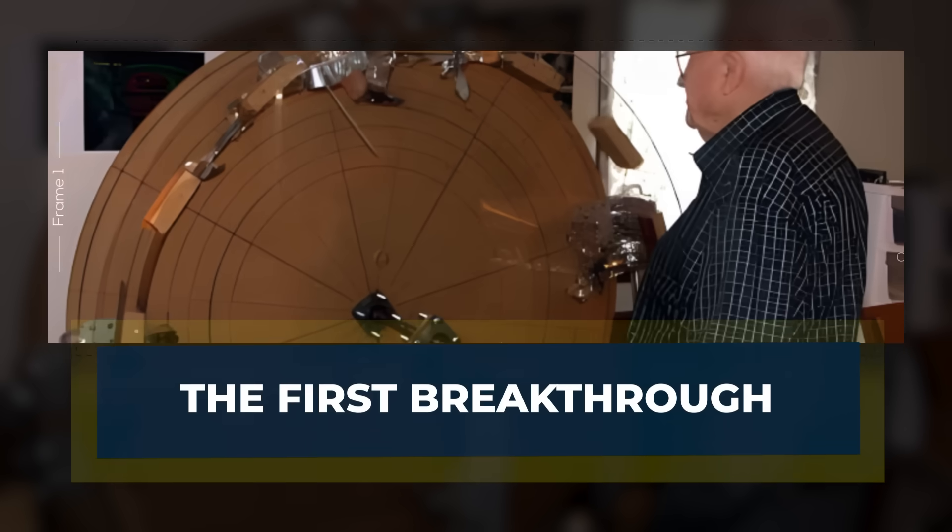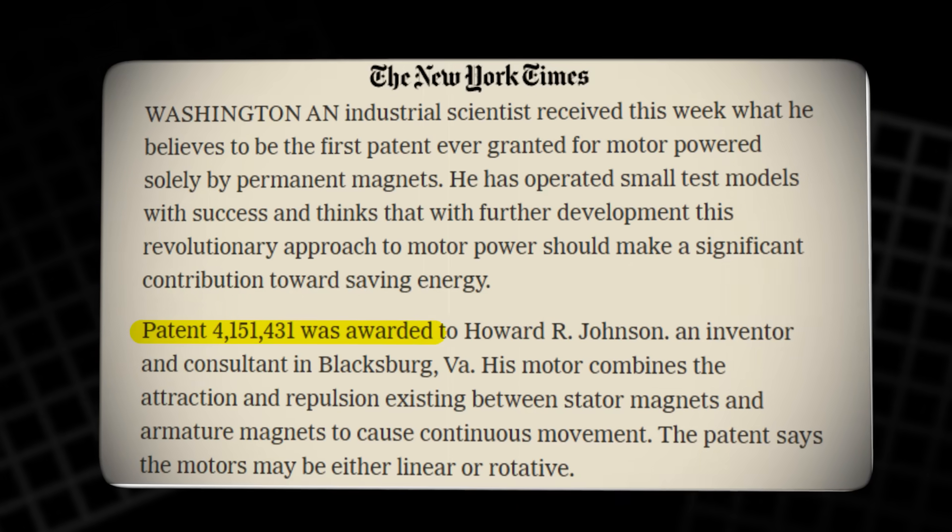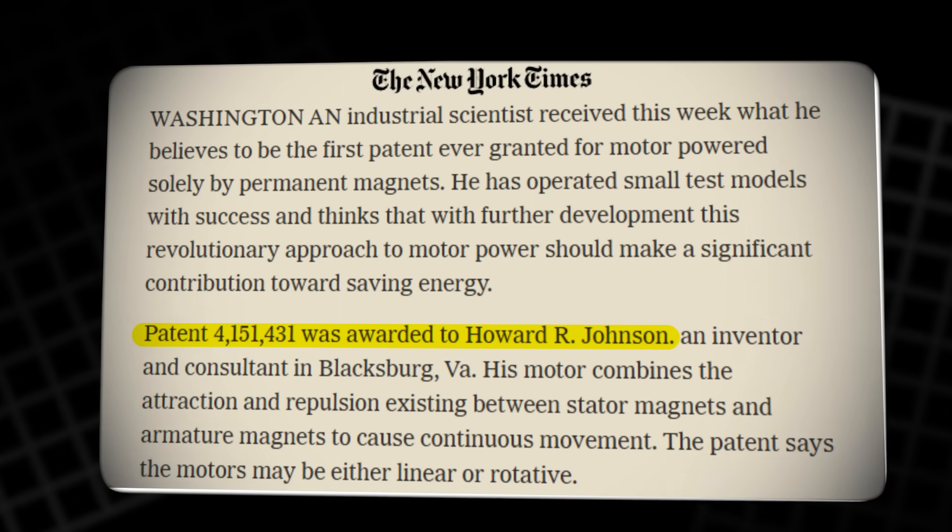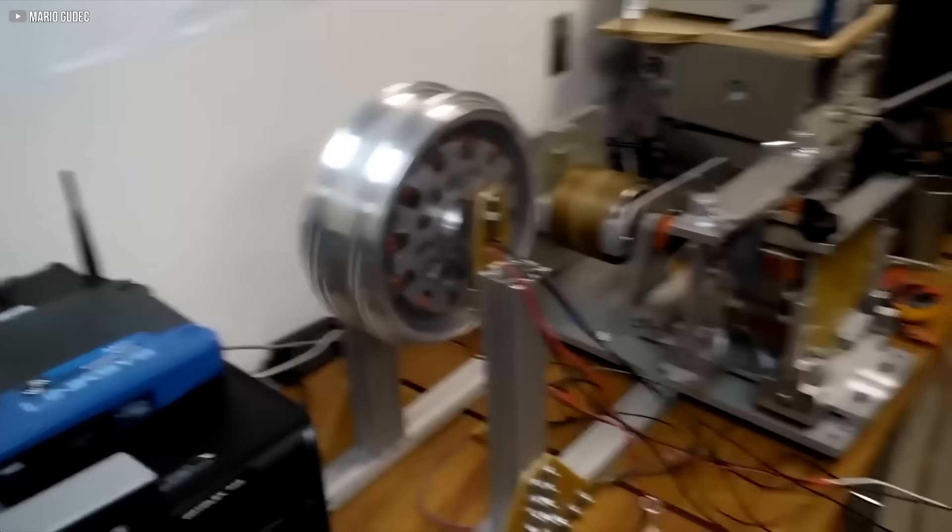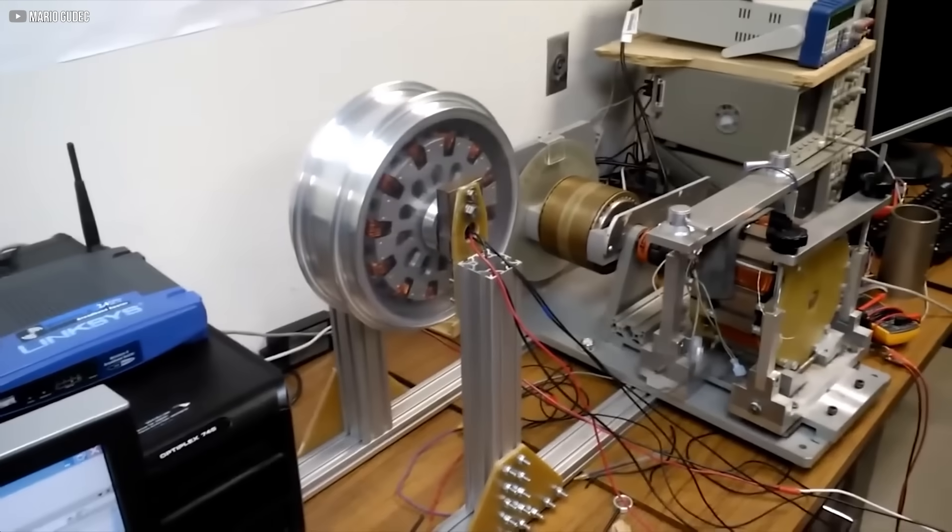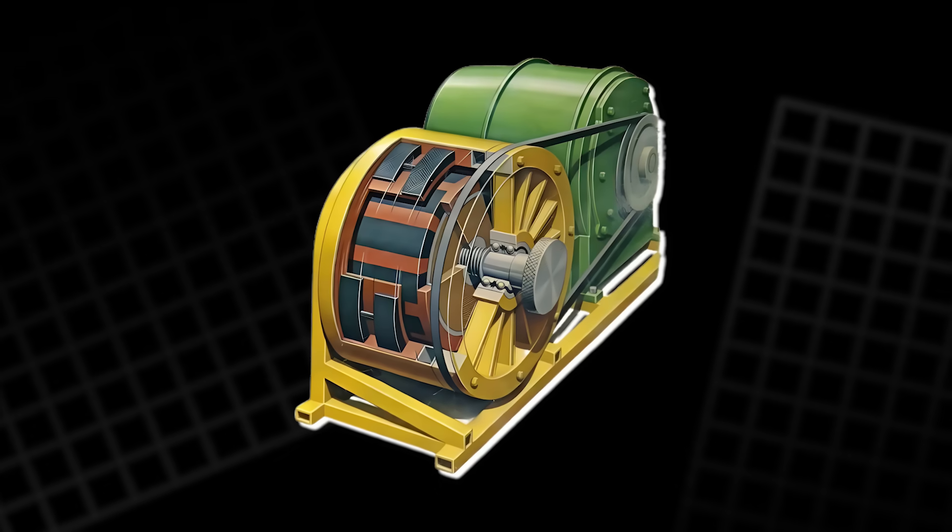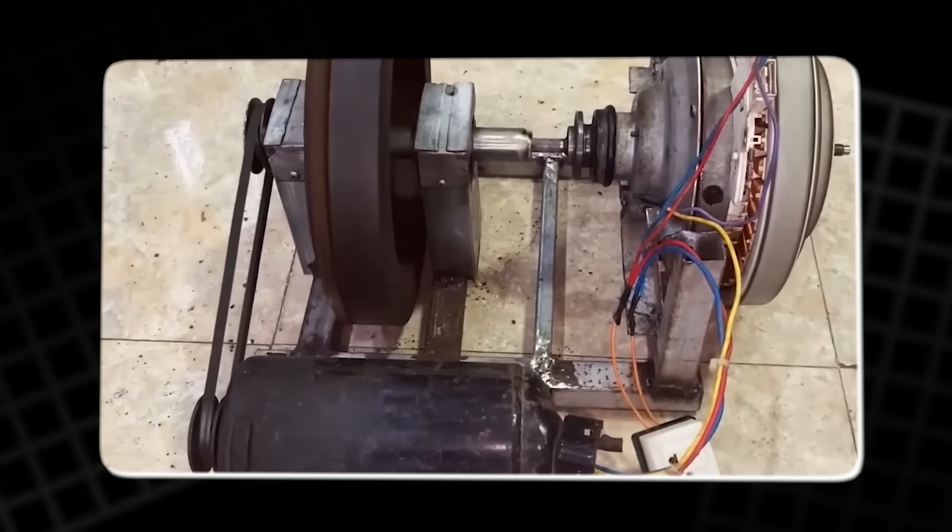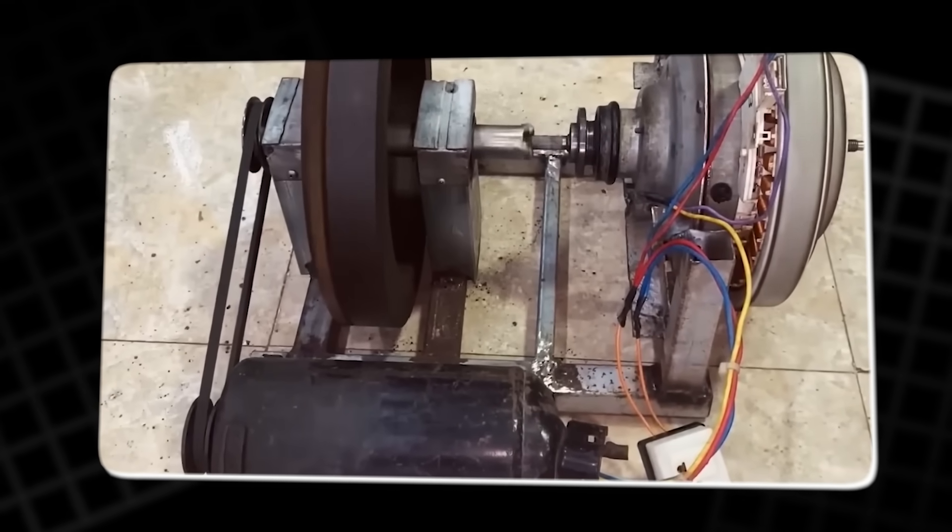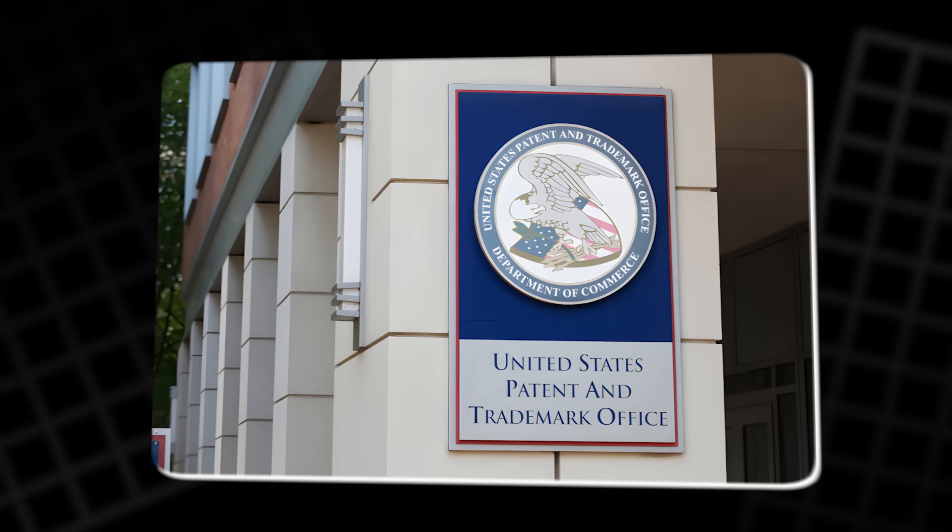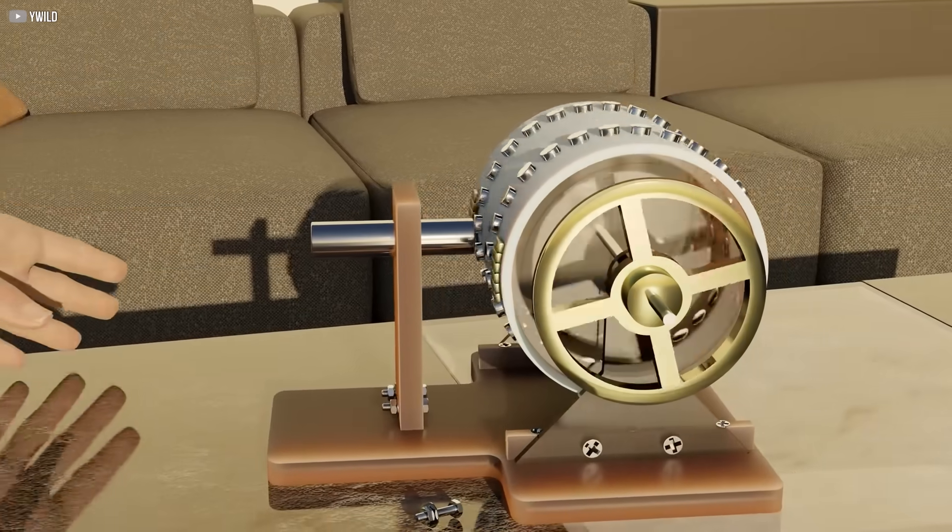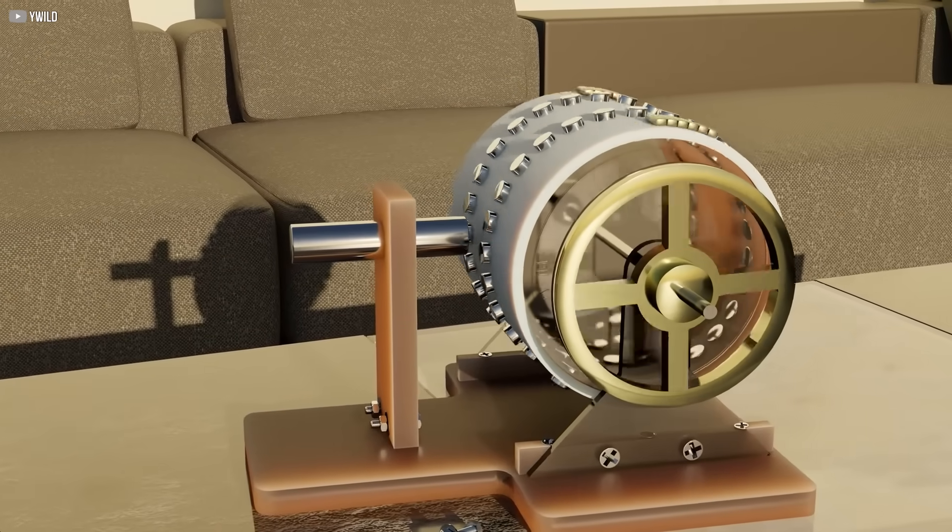The First Breakthrough. In 1979, after decades of quiet experimentation, Howard Johnson was awarded US Patent 4,151,431. It wasn't for a theory or a wild idea. It was for a functioning machine. A motor powered solely by permanent magnets, generating continuous motion without any fuel or external power. The US Patent Office doesn't hand out patents for fantasy. They saw something real, something that worked.